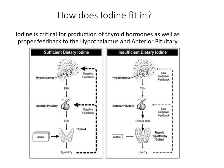Thyroid cells are the only cells in our body that can absorb iodine. The cells combine iodine and an amino acid known as tyrosine to make T3 and T4, which are released into the bloodstream and transported throughout the body to control metabolism. Every cell in our body depends upon thyroid hormones for regulation of their metabolism, so it's very important that we get enough iodine.